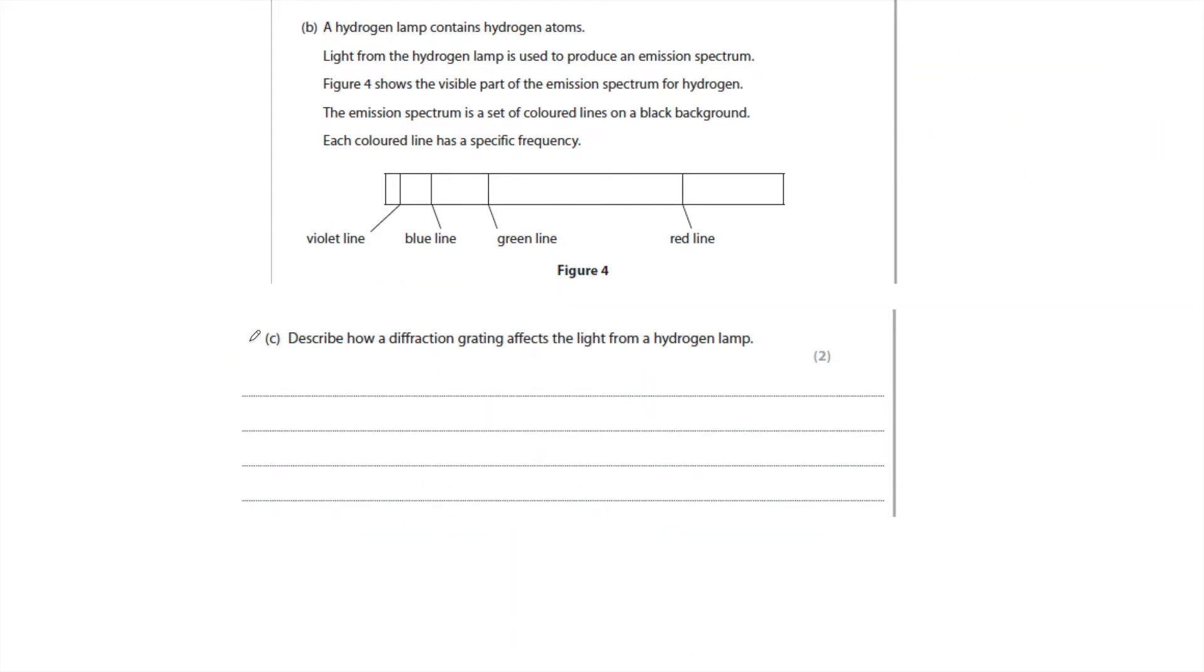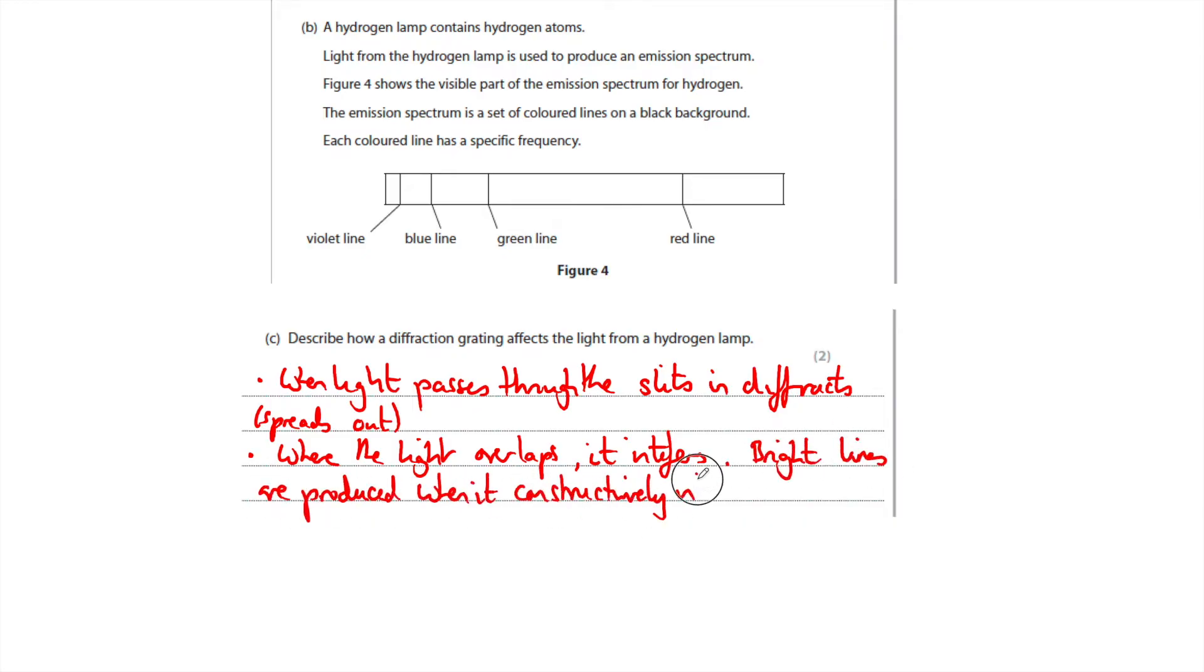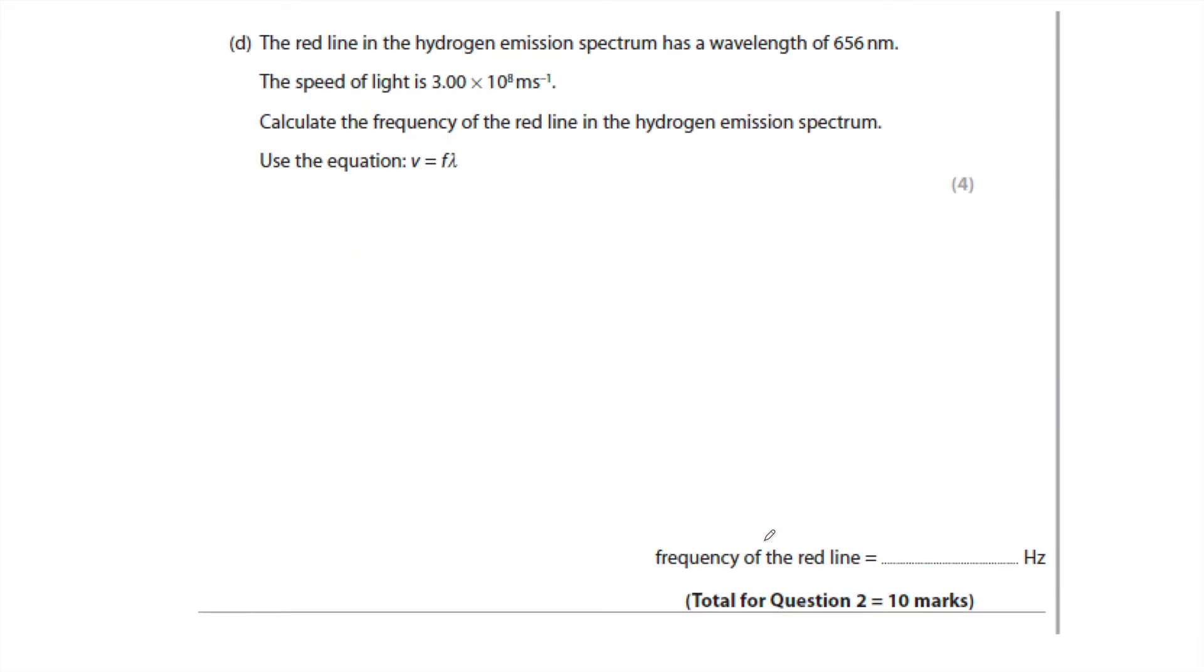Part C says, describe how diffraction grating affects the light from a hydrogen lamp. Well, it's only worth two marks. So, it's not about explaining how it produces a line spectra for two marks. But that is included in the mark scheme. So I would say, first of all, that when light goes through the slit, it diffracts, it spreads out and overlaps. And where you get bright light is where the same frequency of light interferes constructively because the path difference is a whole wavelength. When light passes through the slit, it diffracts, spreads out. Where the light overlaps, it interferes. Bright lines are produced when it constructively interferes. With the same frequency, the path difference is one wavelength.